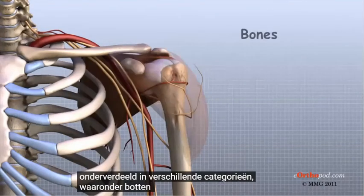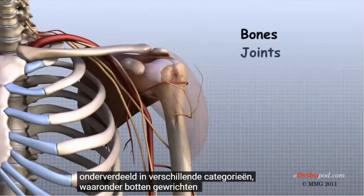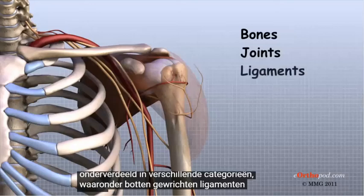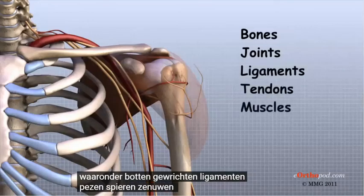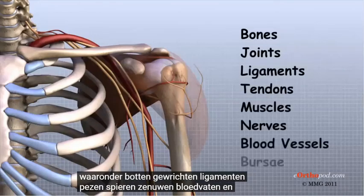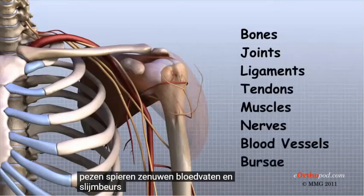These include bones, joints, ligaments, tendons, muscles, nerves, blood vessels, and bursa.